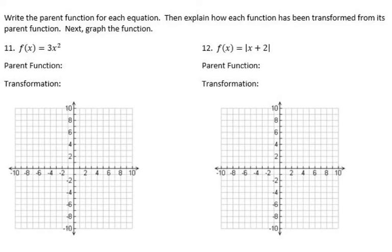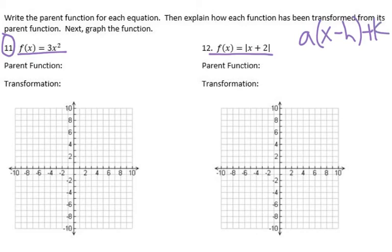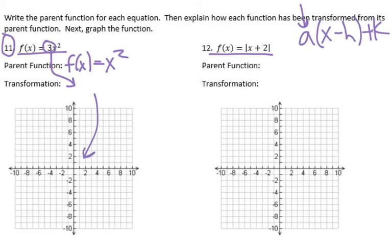Next, graph the function. I'm not going to do the quadratic or the absolute value — you guys can do those ones on your own. Just remember, think about that A times (x minus H) plus K format. Get rid of any of the pluses, minuses, or multiplying with A, and that should lead you to the parent function. For example, f of x would equal x squared — get rid of that three. For number twelve, f of x equals absolute value of x — how did that plus two transform it, and what would that look like as a graph?